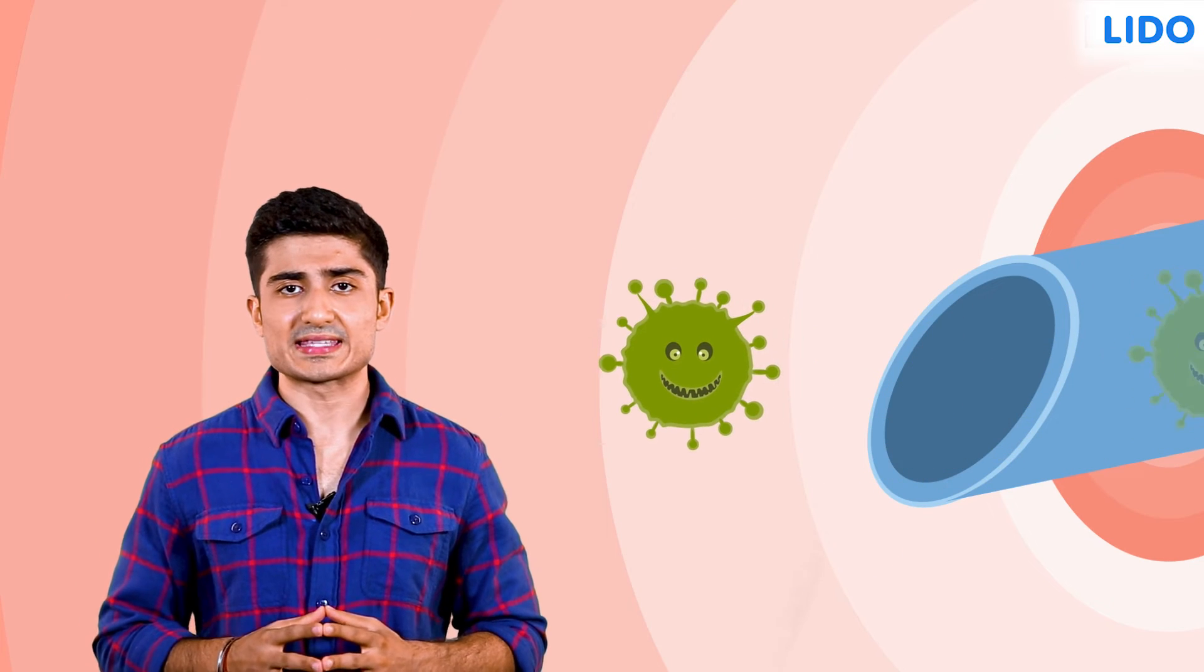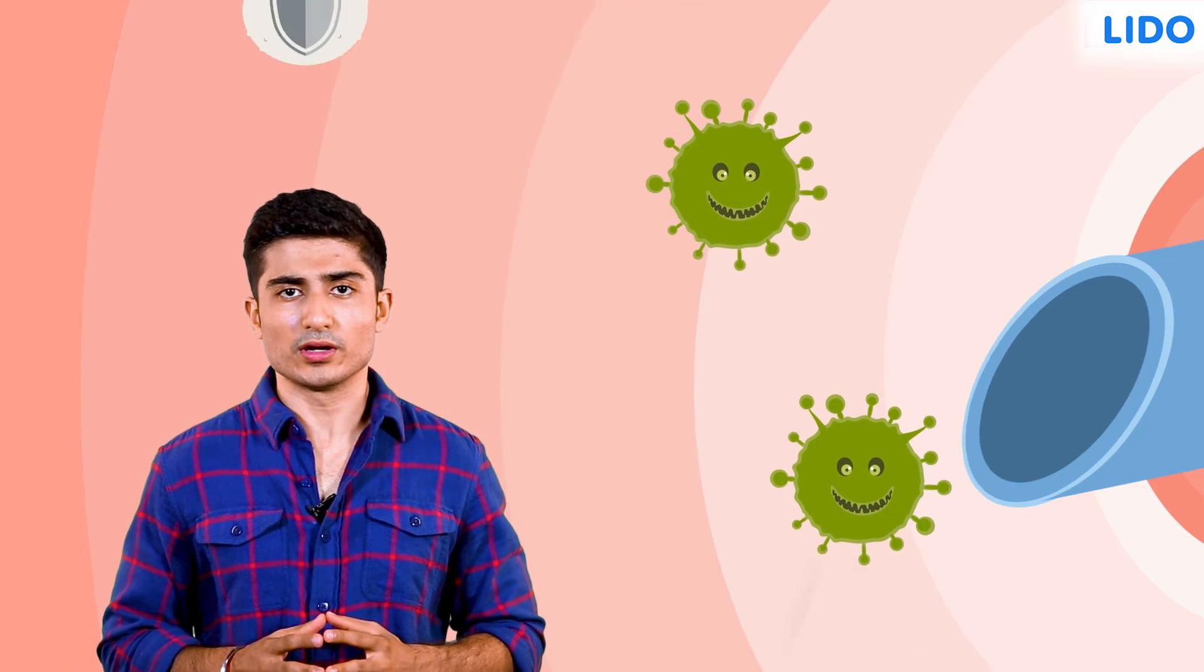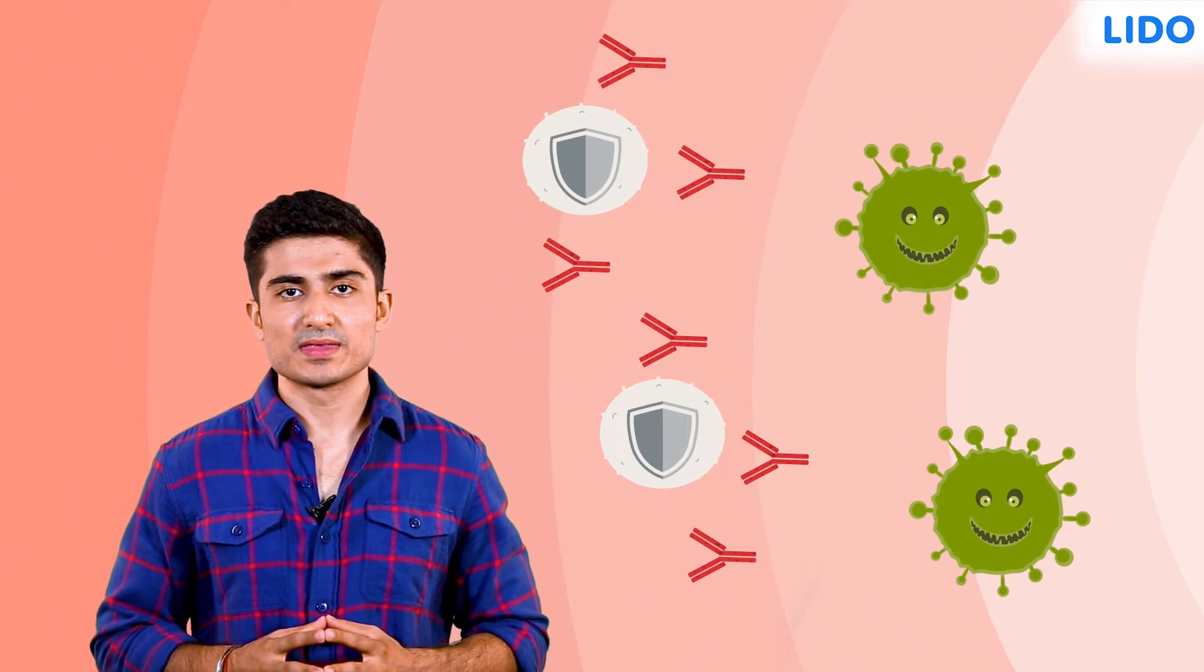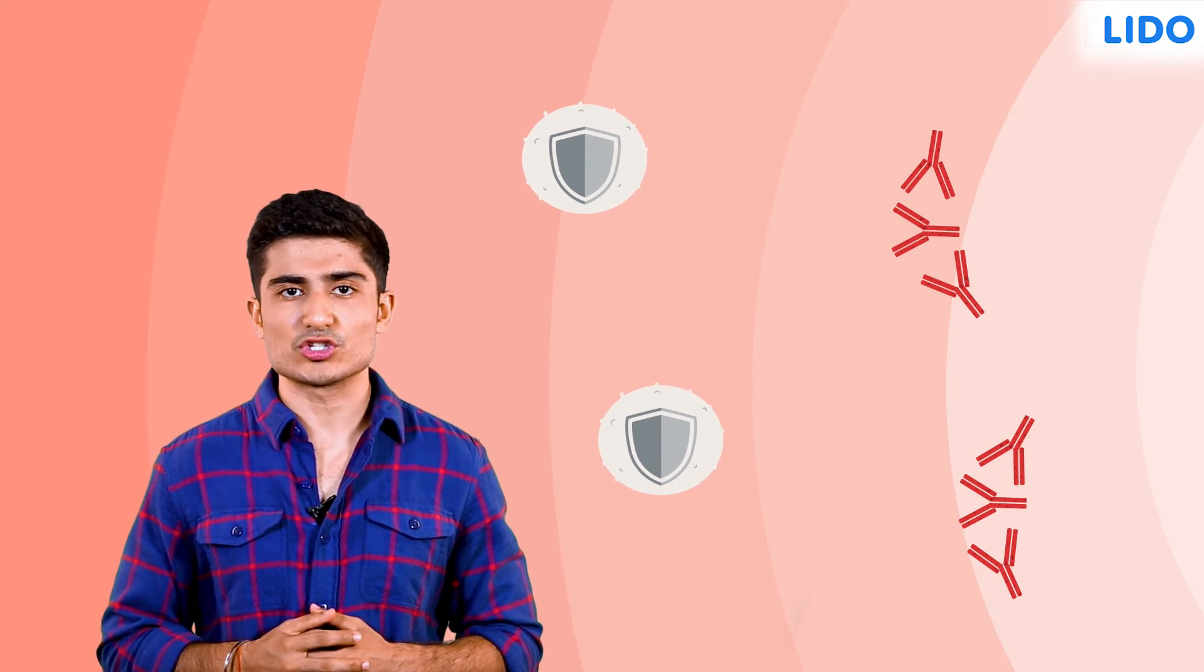Your immune system reacts to the vaccine in a similar way that it would if it were being invaded by the disease, by making antibodies. The antibodies destroy the vaccine germs just as they would destroy the disease germs, like a training exercise. The antibodies remain in your body, giving you immunity.